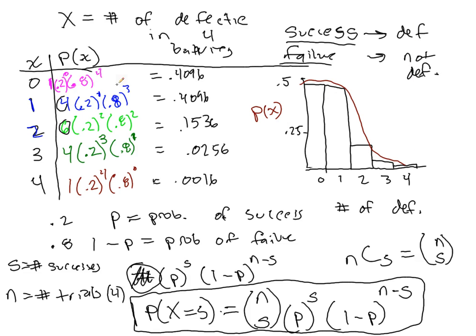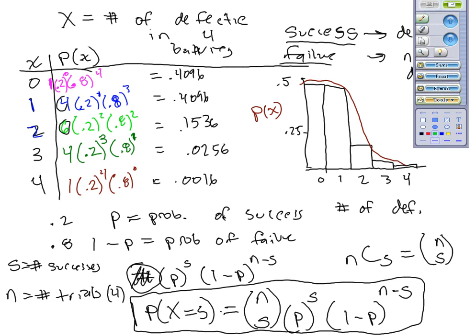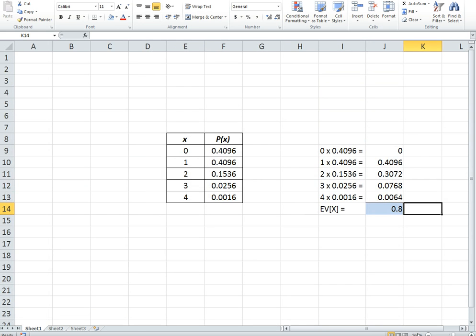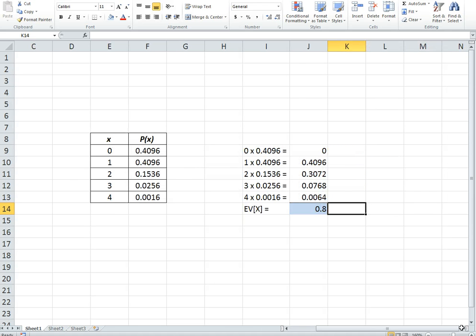We just need to know what the probabilities are. And remember, this whole thing simplifies to this whole thing right here. Okay, so let's find the expected value now. We were asked to find the expected number of lightbulbs in a 4-pack. So what I have going on here in this Excel spreadsheet is what we saw on the other page, the probabilities.